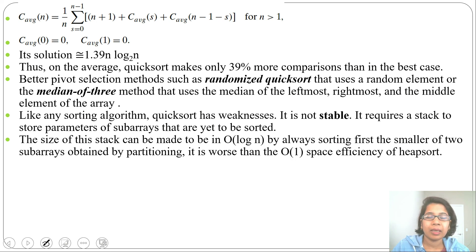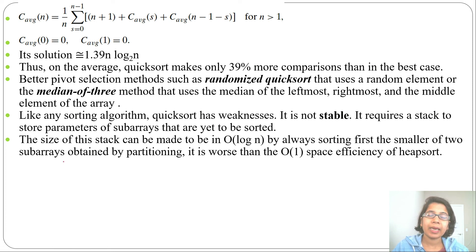In today's lecture I discussed the performance of QuickSort, covering analysis of best case, worst case, and average case. Best case and average case running time are θ(n log n), while worst case is θ(n²). In the next lecture I will solve some questions based on QuickSort. If this lecture was helpful, please like and subscribe. Thank you.